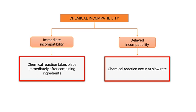The first classification divides chemical incompatibility into two types: immediate incompatibility and delayed incompatibility. In immediate incompatibility, when the ingredients are combined together, the chemical reaction takes place immediately while mixing. In delayed incompatibility, the chemical reactions occur at a slow rate.